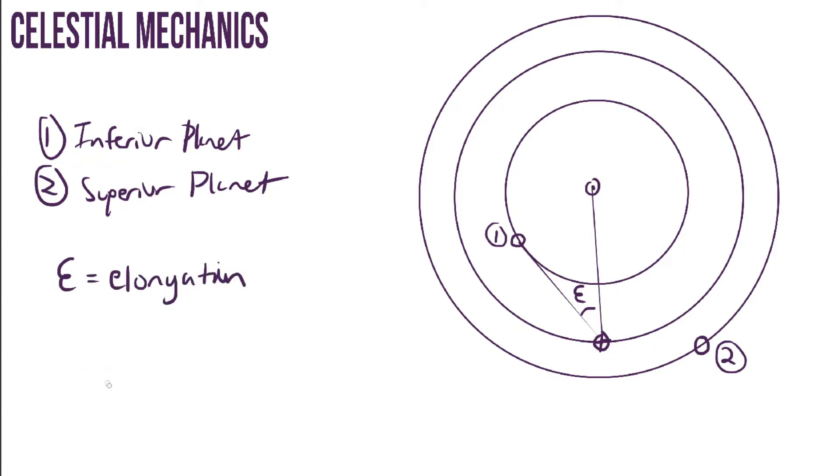There are some elongation values that have their own names. When the elongation is 180 degrees, we call this opposition. When it is 90 degrees, we call this quadrature. And when this angle is 0 degrees, we call this conjunction.